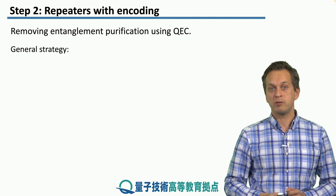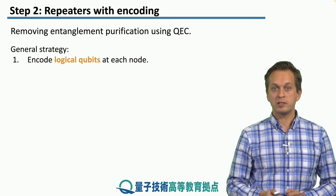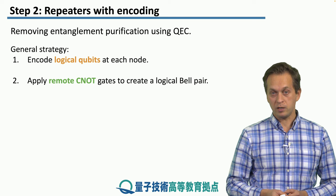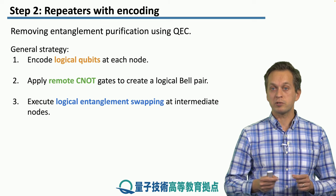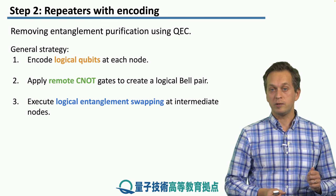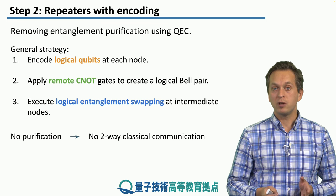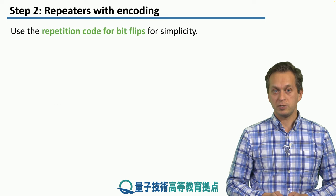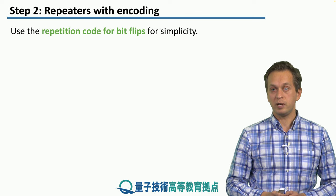The general strategy for applying quantum error correction in the context of quantum communication is the following. First, we encode the logical qubits at each node, as we saw how to do in the first step. Step two is to apply a remote CNOT gate in order to create logical bell pairs shared between neighboring nodes of the network. Step three is to apply logical entanglement swapping in order to stretch this logical entanglement between nodes that are further apart. Here there is no purification, which means no two-way classical communication. We're going to demonstrate this with the repetition code for bit flips, and note that the basic logic applies to more complicated error correcting codes as well.